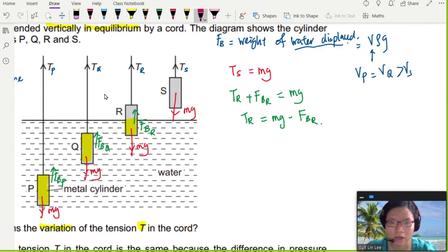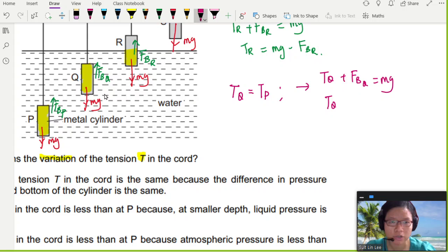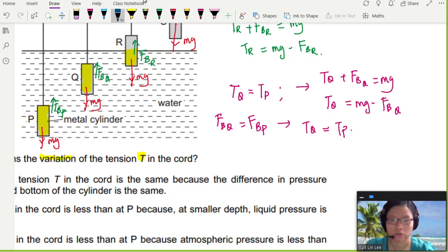So if I want to write out the equation for TQ and TP, TQ is equal to TP. How do I know this? Because TQ plus the buoyancy force at point Q is equal to mg. So you'll get back a very similar expression. The tension at Q will be the weight minus the buoyancy force of cylinder Q. The buoyancy force of cylinder Q is equal to the buoyancy force of cylinder P. So because of this, you can say the tension in Q is equal to the tension in P.